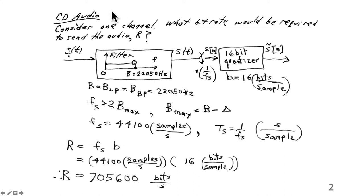For CD audio, consider one channel, it's stereo but just one channel, what bitrate would be required to send that audio signal? The bitrate would be R in bits per second. The original high-frequency audio signal is filtered so that all frequencies are lower than 22,050 Hz. Then they're sampled at a sampling frequency of Fs, or a period of 1 over Ts in seconds per sample. The quantization is 16 bits per sample in this quantizer. The bandwidth here, B, is the low-pass bandwidth. It's the bandpass bandwidth, and it's 22,050 Hz.